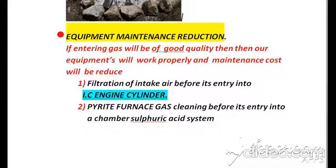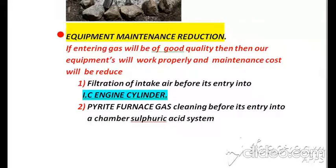The second purpose of gas cleaning is equipment maintenance reduction. If entering gases are of good quality, our equipment will work properly and maintenance cost will be reduced. Examples of this are: filtration of intake air before its entry into an IC engine cylinder, and pyrite furnace gas cleaning before its entry into the contact chamber of a sulfuric acid system. During manufacturing of sulfuric acid, pyrite burners are used and gases are introduced into these burners. Entry of gas into both IC engine cylinders and pyrite burners must be clean to avoid maintenance cost.